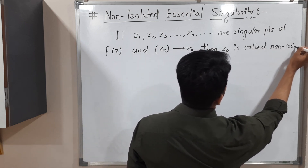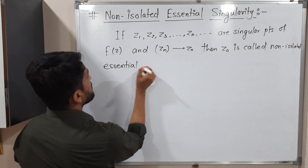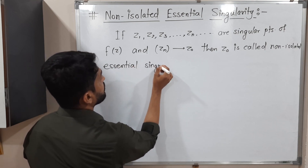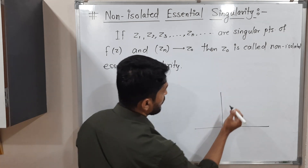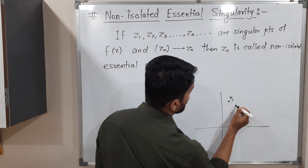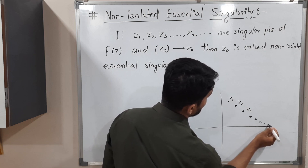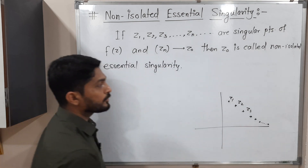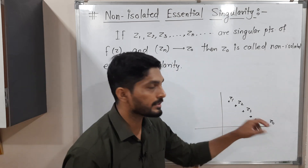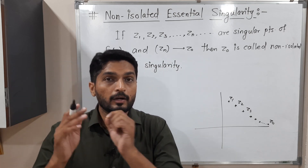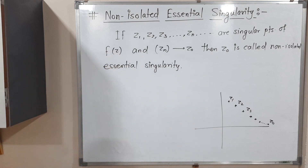If this sequence converges to some point z0, then z0 is called a non-isolated essential singularity. In the z-plane, suppose we have a sequence of singular points z1, z2, z3, z4, z5, z6, and so on, and all these singular points — this sequence — converge to a single point z0. All these points are moving towards the single point z0, then z0 is called a non-isolated essential singularity.